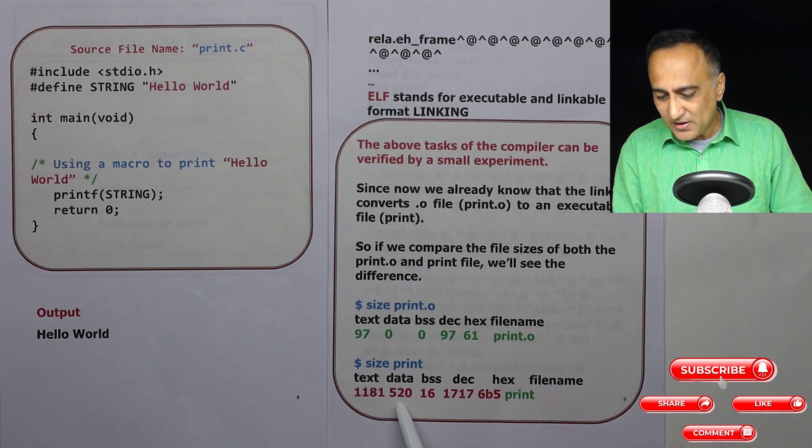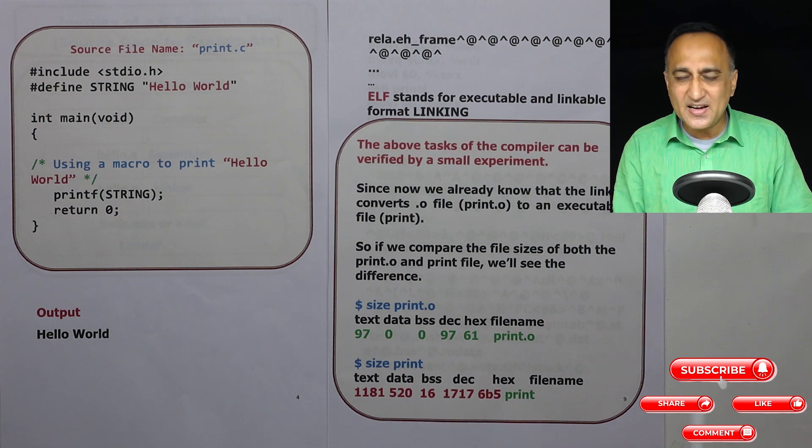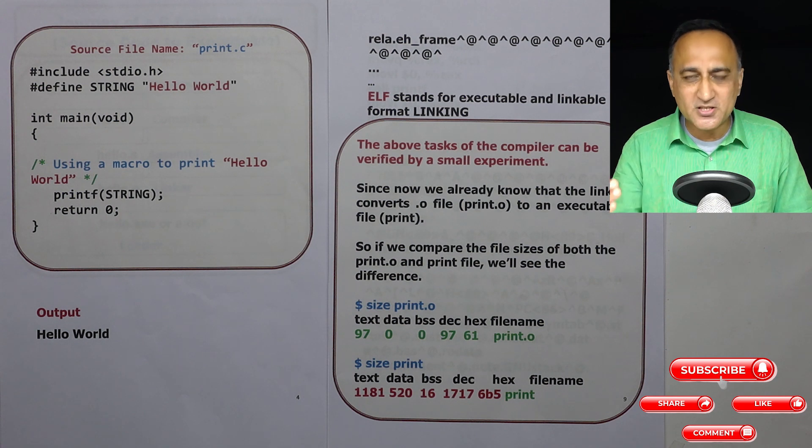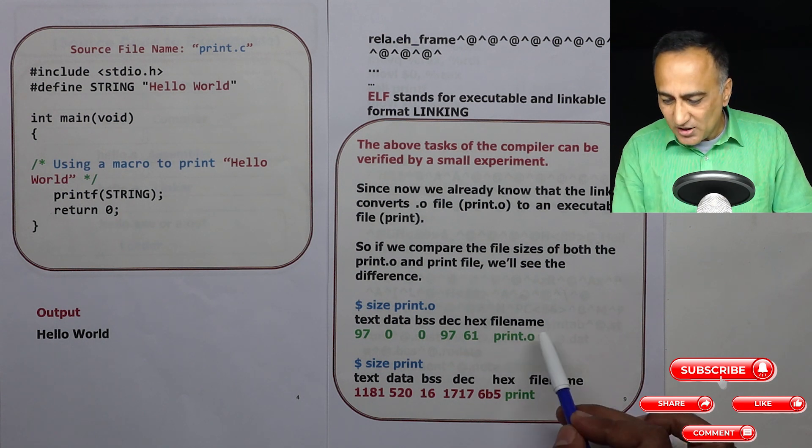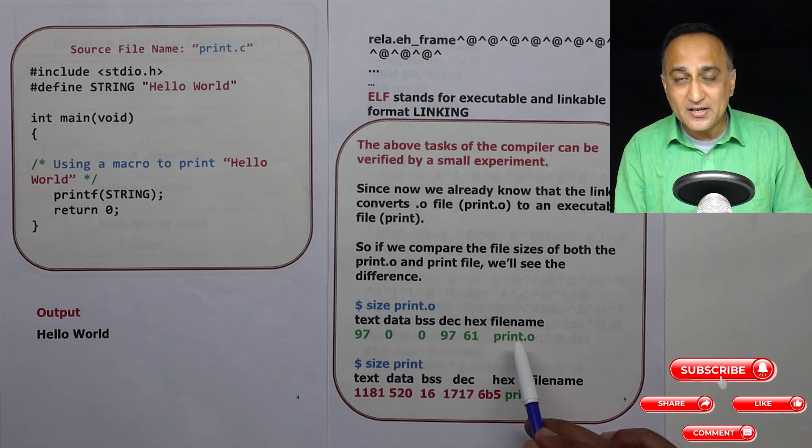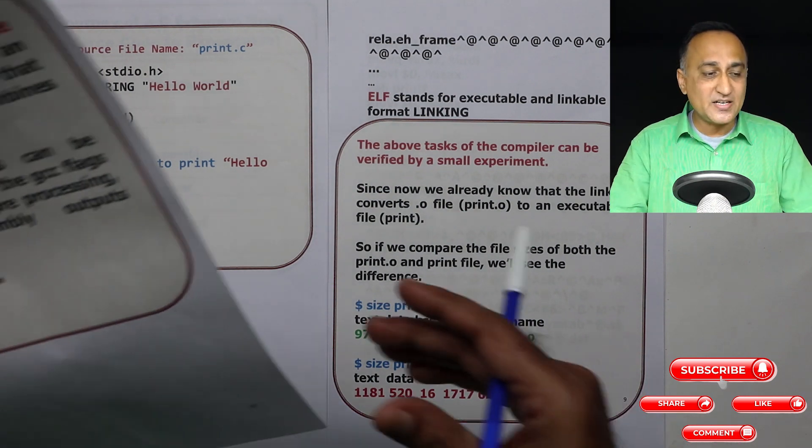Now when I pass it on to the linker, now you can see the size of print.exe has changed. Text is 1181, data is 520, BSS is 16, DEC is 1717, hex is 6b5 and file name is print. Don't worry what this text, data, BSS, dec, and hex mean. We will deal with that at the right time when we deal with functions and things like that. So here you have seen this was the output size when it was just compiled. Now you see when it was linked. So this should have given you a clear idea that the linker has done its job.